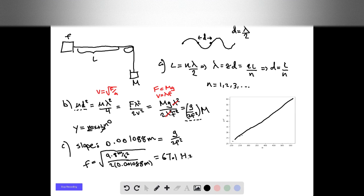Finally, moving on to part D. What we want to do is for a string with mass per unit length of 0.026 grams per centimeter, we want to find m given that D is equal to 24 centimeters. Find it in grams.